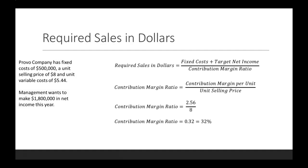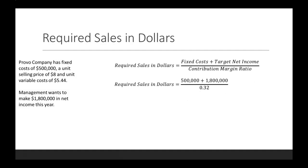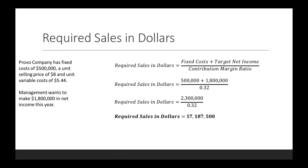Now we have all the pieces to work on the required sales in dollars. We plug in our fixed costs and our target net income and divide by 0.32. Fixed costs plus target net income is $2,300,000 divided by our contribution margin ratio of 0.32, and we see that we need to make $7,187,500 in sales to achieve a net income of $1.8 million.